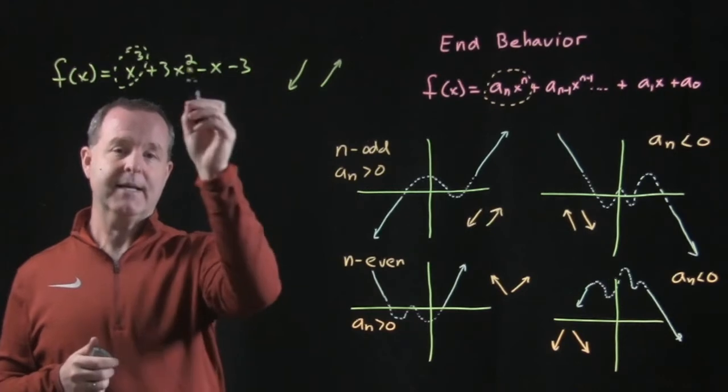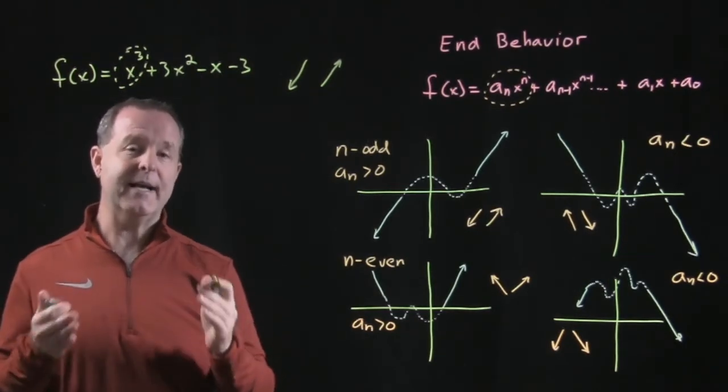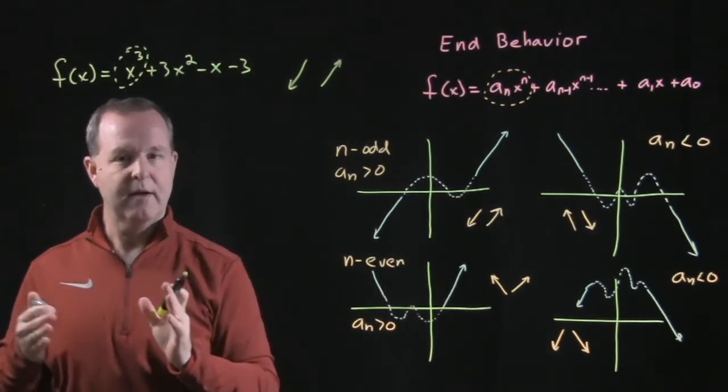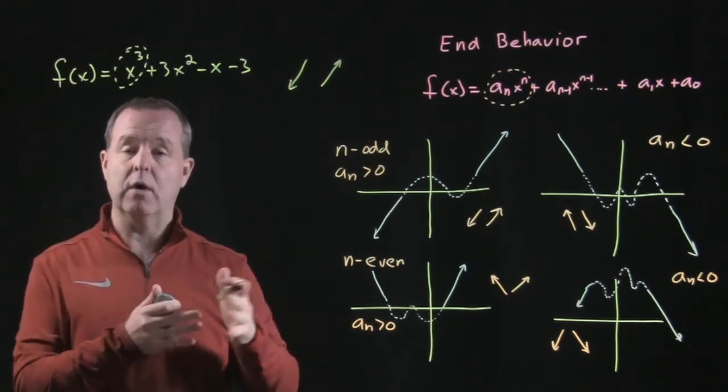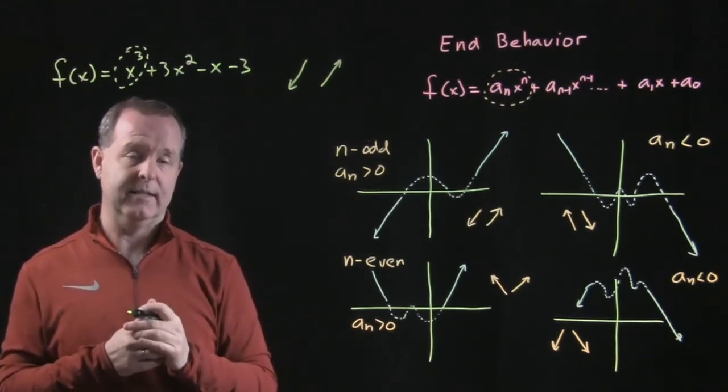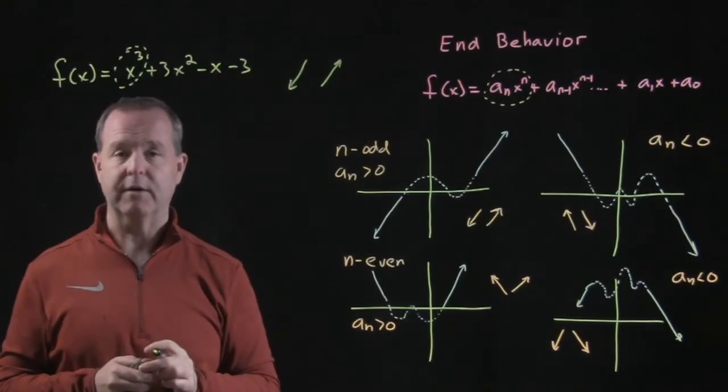So because of that, we can look at the first term to get an idea what happens when we have large x's or large absolute value of x's that determines our end behavior.